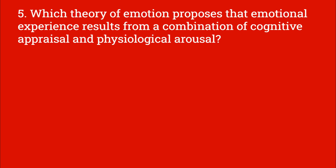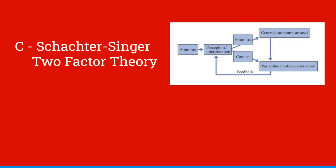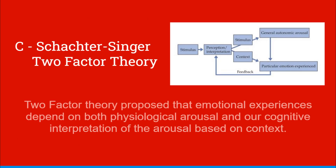Which theory of emotion proposes that emotional experience results from a combination of cognitive appraisal and physiological arousal? And this would be C, Schachter-Singer two-factor theory. Two-factor theory proposed that emotional experiences depend on both physiological arousal and our cognitive interpretation of the arousal based on context.